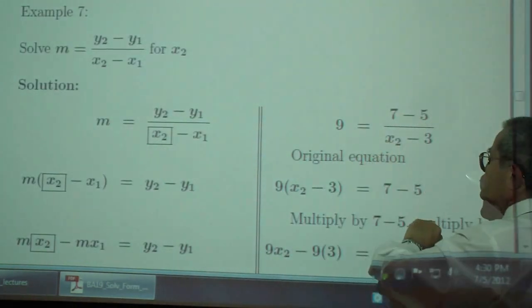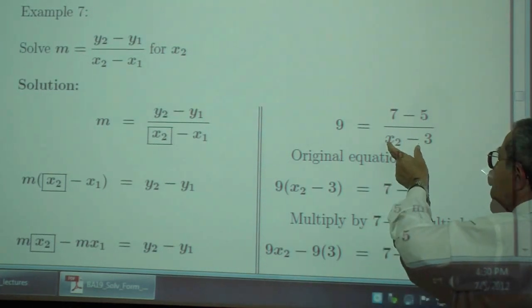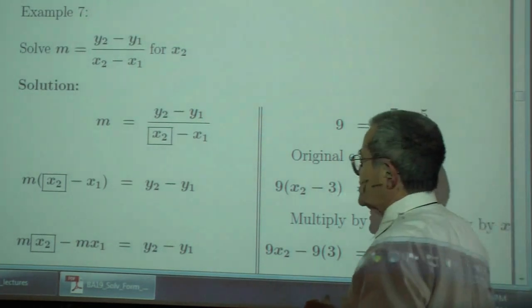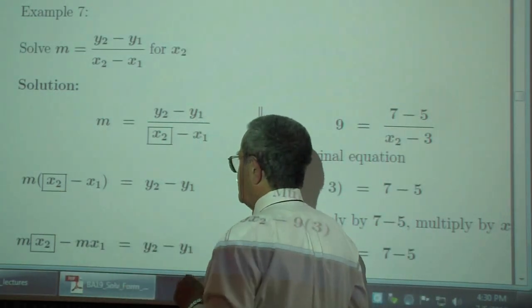So, we want to solve for x sub 2. First step, multiply both sides by the denominator, x sub 2 minus x sub 1. Get rid of the denominators first.